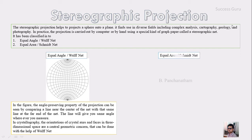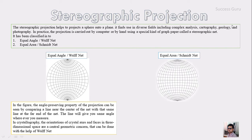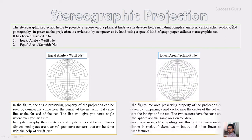The equal area net, that is the Schmidt's net, will look like this. It preserves the area — that is, if you measure a box in any portion of the sphere, the box will give you the same area. In general, structural geology people use this type of net, that is the equal area net.